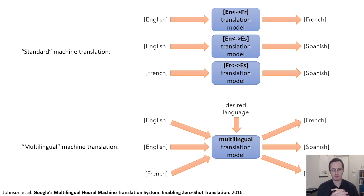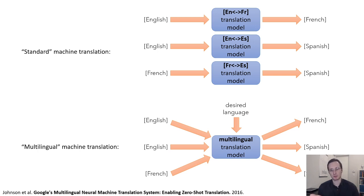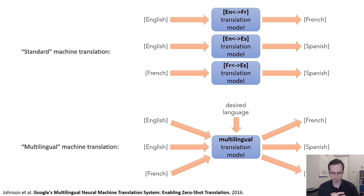Why might this be a good idea? Those of you who speak multiple languages might already be guessing. A lot of languages share commonalities. If you know Spanish, that doesn't mean you can speak Italian, but you can often make a decent educated guess at the meaning of individual Italian words because of similar roots. A multilingual model could similarly learn these commonalities between languages, and even for languages with relatively few examples, make educated guesses about how to translate into those languages.